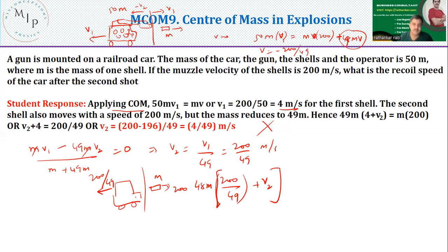V2 should now equal M multiplied by 200. So what is this 200 over here? 200 by 49. This is negative here. Why negative? Because it's moving backwards. So as a result of this, M and M goes away. I can now write minus 200 by 49 plus V2 should equal 200 divided by 48. In other words, V2 should equal 200 into 1 by 48 plus 1 by 49. This should be your answer.